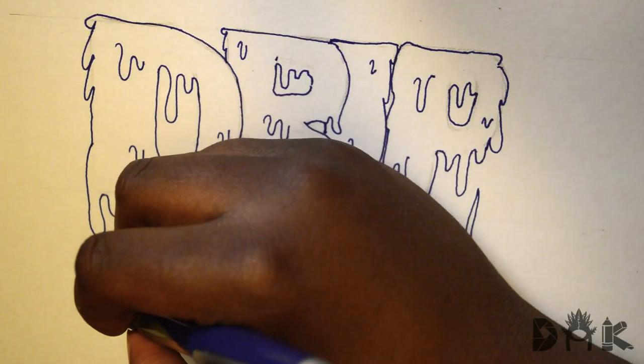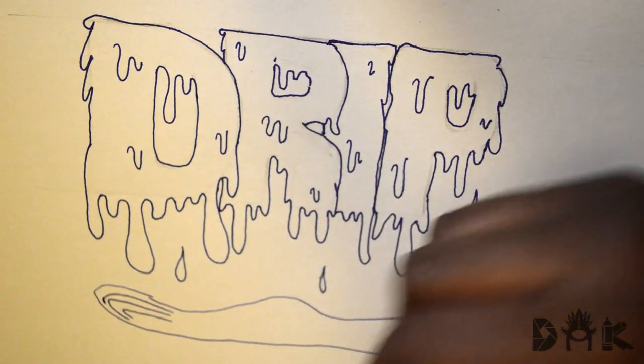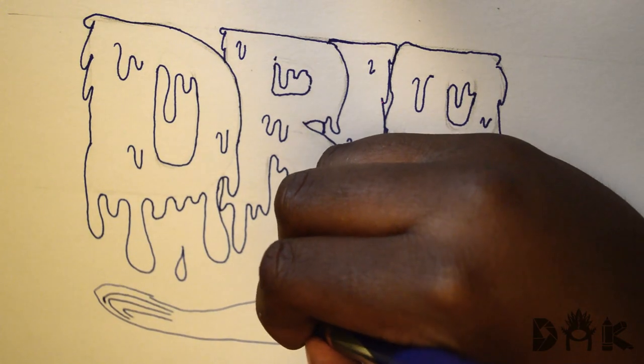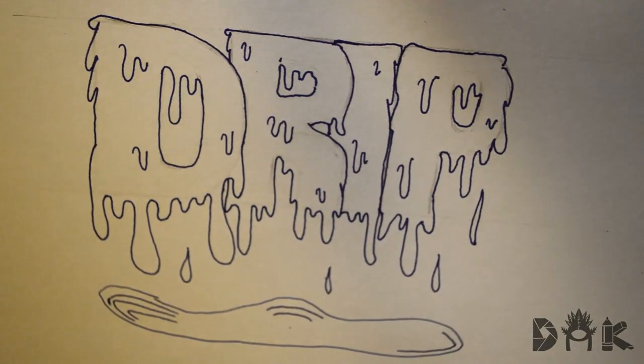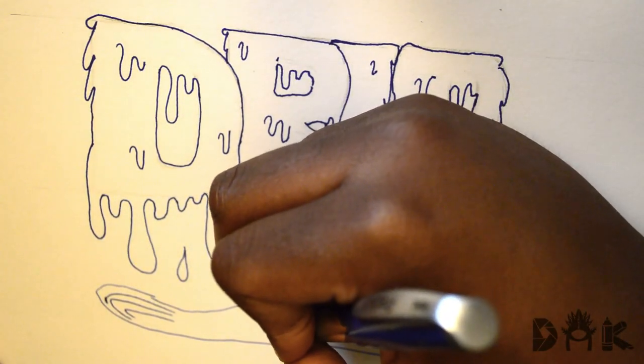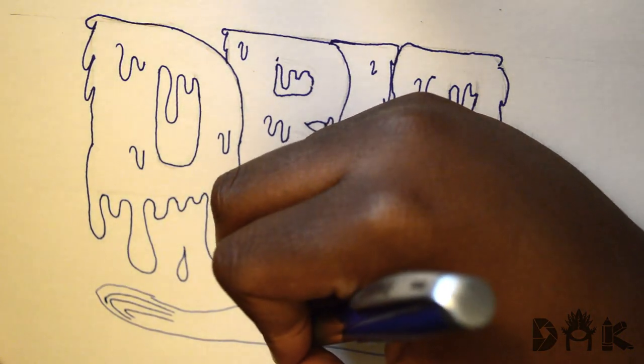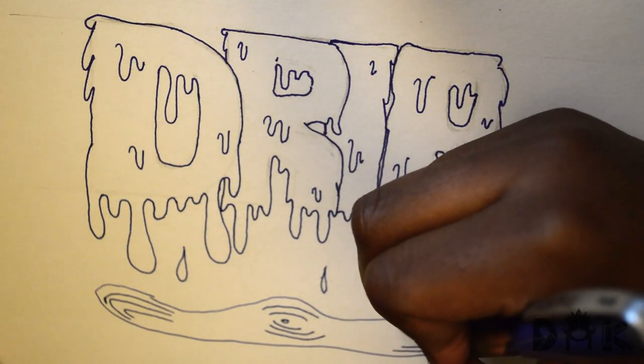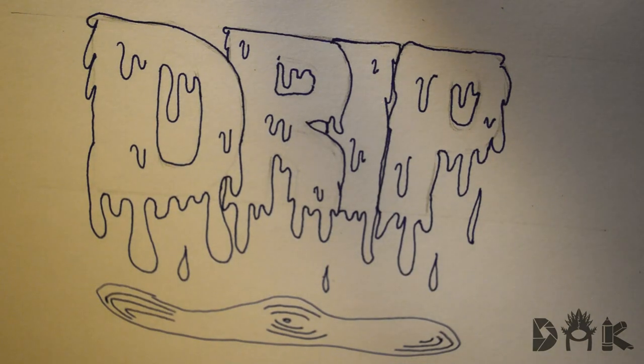If you want it to look even more realistic, from the longer ones you can add these little rings in the water to signify that it's disrupting the flow of the water that's pooled around the bottom. There you go, that's how you draw a drip. Thanks for watching.